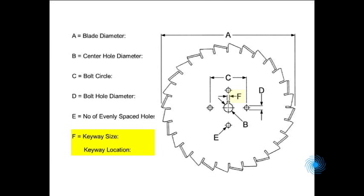F is used if a keyway is requested. Please provide the keyway width and location relative to the pattern.